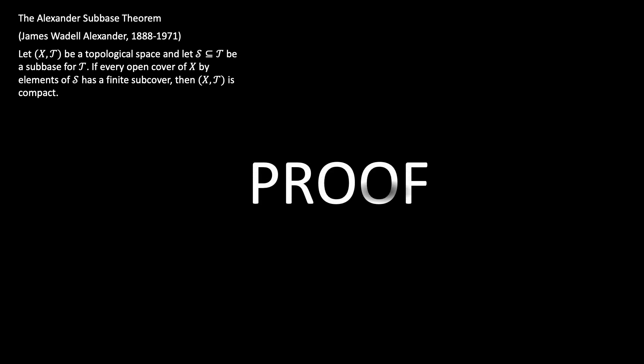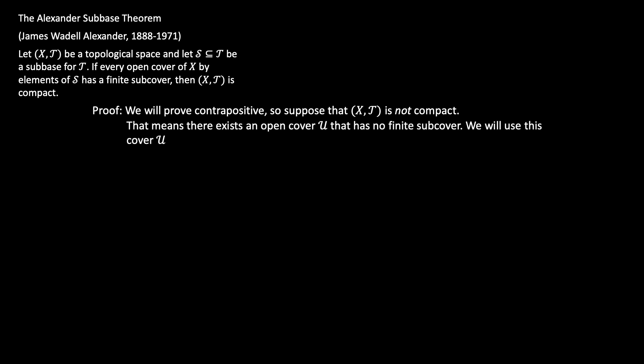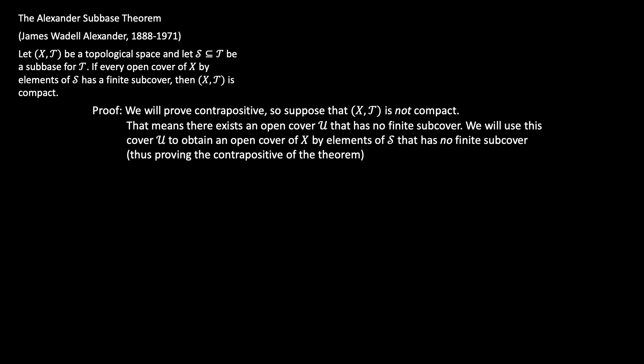So finally, let's get to the proof of the Alexander Subbase Theorem. It's a long proof, so get ready. What we're going to do is prove the contrapositive. Suppose that the topological space is not compact. That means there exists an open cover U that has no finite subcover. We're going to use that cover U to obtain an open cover of X by elements of the subbase S that has no finite subcover — and if you look at the theorem statement, that is exactly the contrapositive.